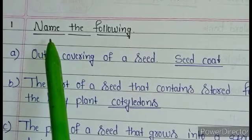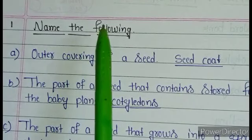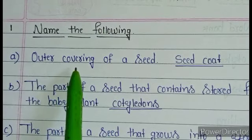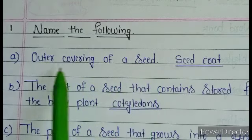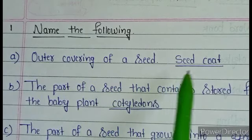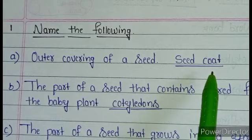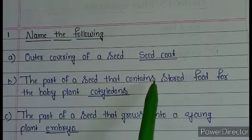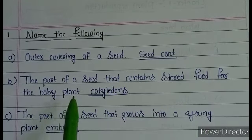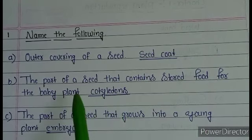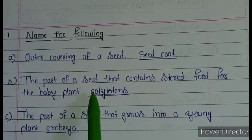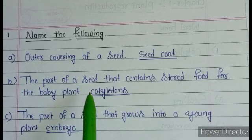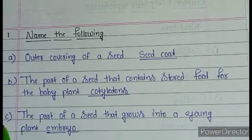Next, name the following. The first question: the outer covering of a seed is called the seed coat. Next, question B: the part of a seed that contains stored food for the baby plant is cotyledons.